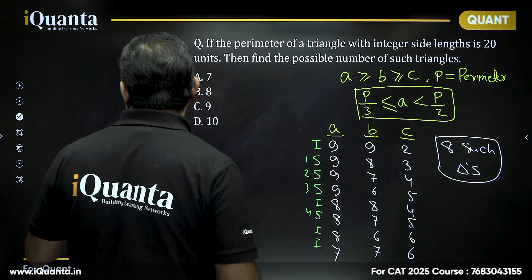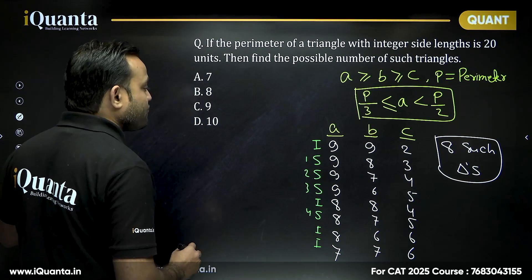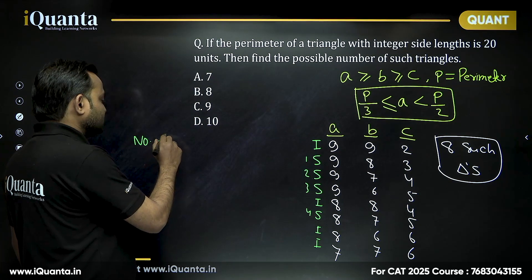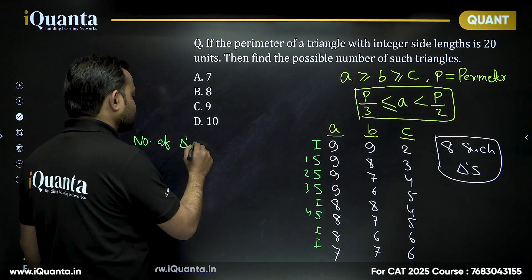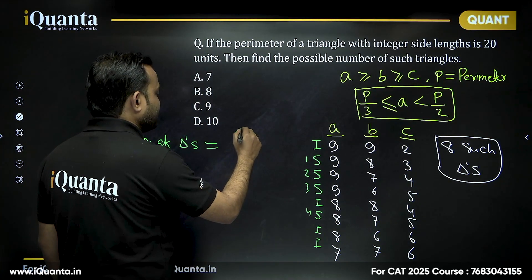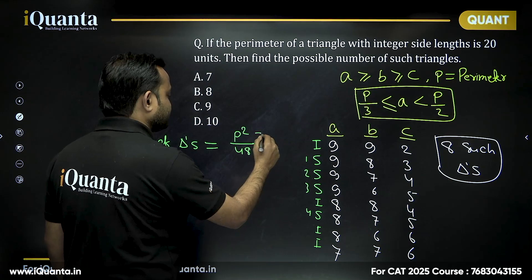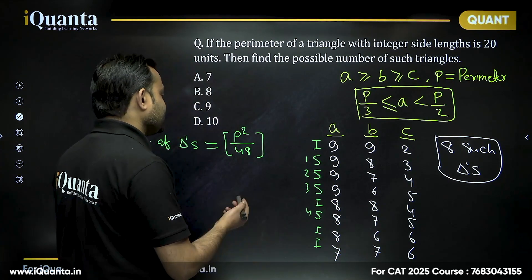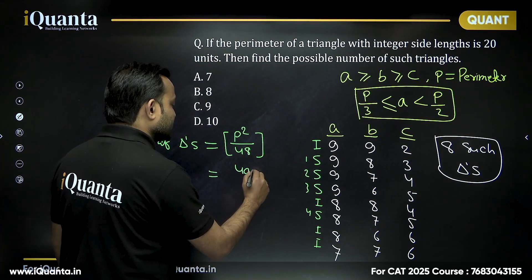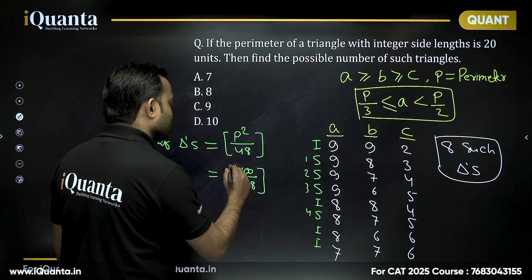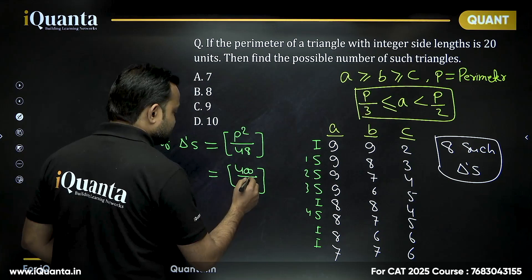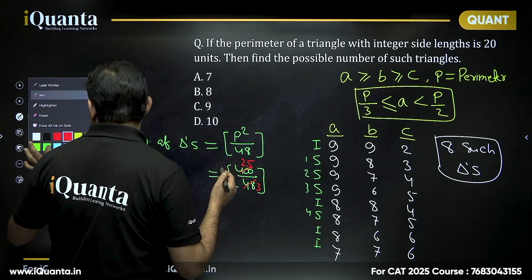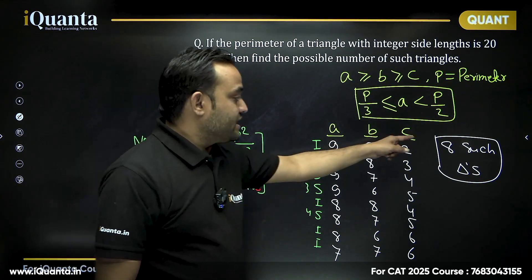We can also use a direct formula. When perimeter P is even, the number of triangles with integer sides equals the nearest integer of P² / 48. For P = 20: 400 / 48 = 25/3, which equals exactly 8. So you can use this formula directly.